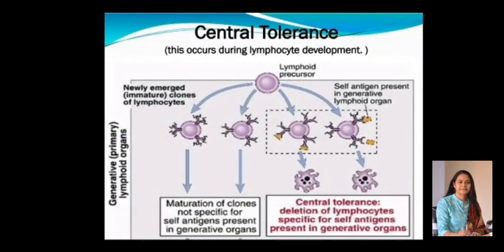Tolerance can either be central or peripheral. Central tolerance occurs during lymphocyte development. A lymphoid precursor leads to newly emerged immature clone cells of lymphocytes that mature normally and are non-self-reactive. But in the case of self-destructive cells, self-antigens present in the generative lymphoid organs come in contact with these lymphoid cells and they die. So central tolerance is the deletion of lymphocytes specific for self-antigens present in the generative organs; cells active against self-antigens are eliminated.